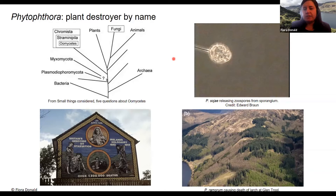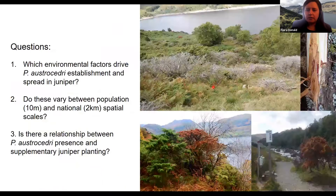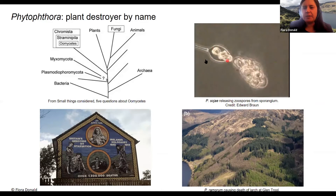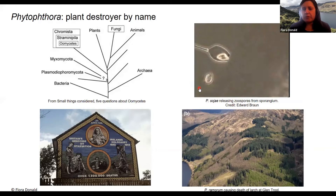Phytophthora can spread asexually and sexually, but Phytophthora austrasidri, which I'm going to talk about specifically, we think from genetic analyses is only spreading asexually. You can see zoospores being released from the sporangium. Zoospores are short-lived and flagellate, so they can swim through soil moisture, and they could also be transported if infected soil is moved from one place to another.